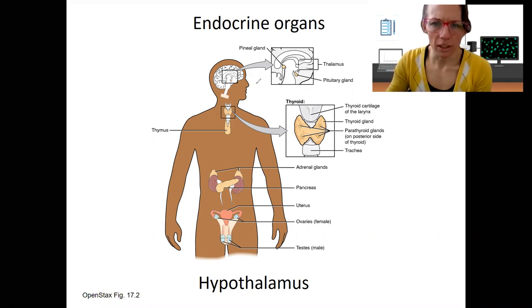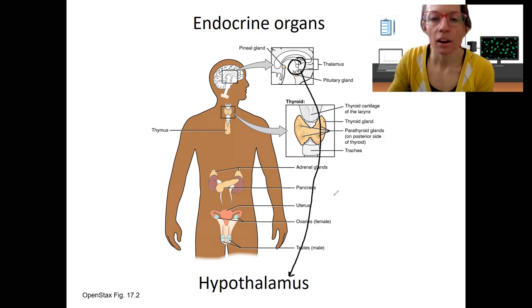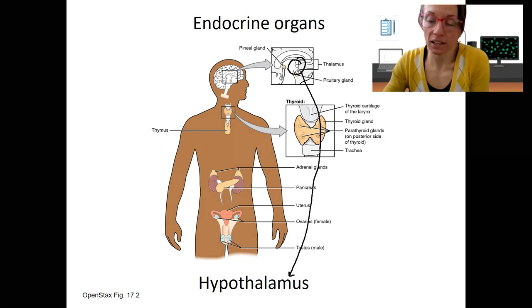We're going to start with one that's actually not even labeled on this. Here's the thalamus. So just below the thalamus is our hypothalamus, and that's what we're going to start with. It's quickly going to be connected to the pituitary gland, and this is probably the most complex endocrine organ.